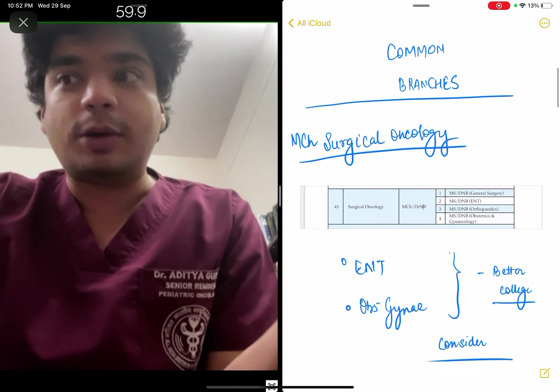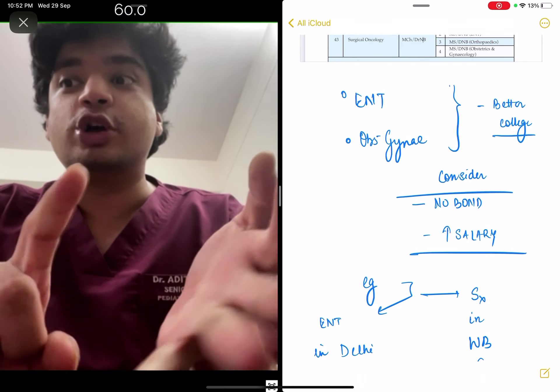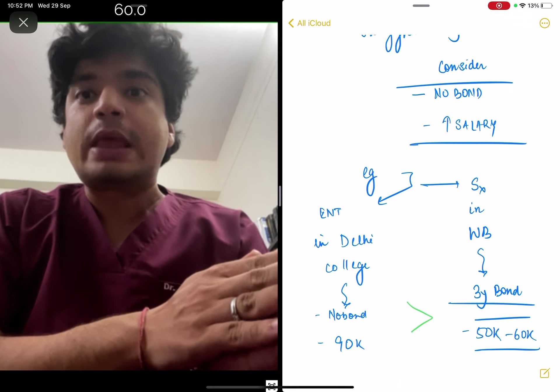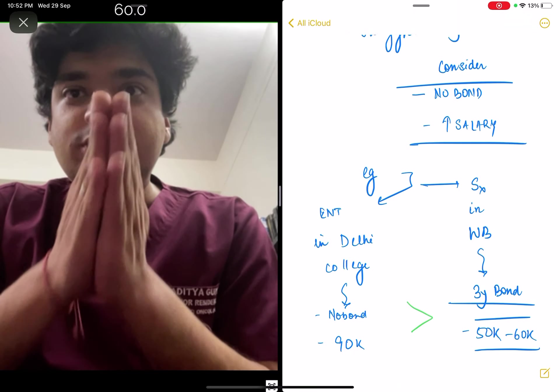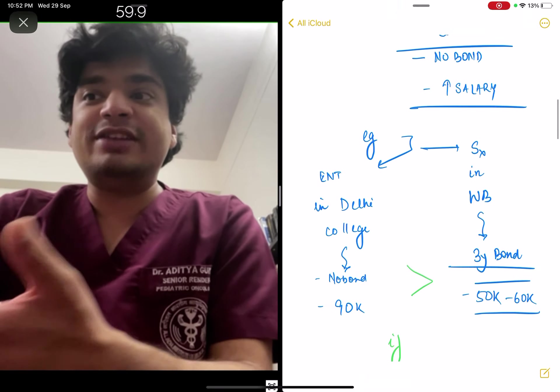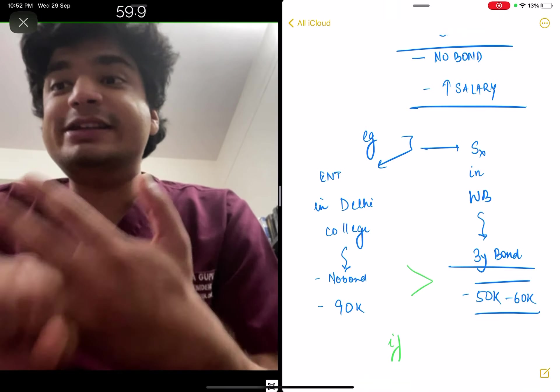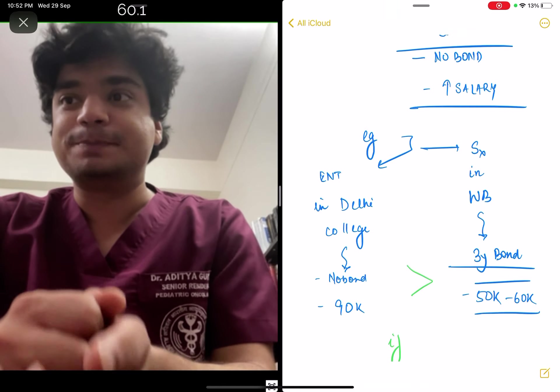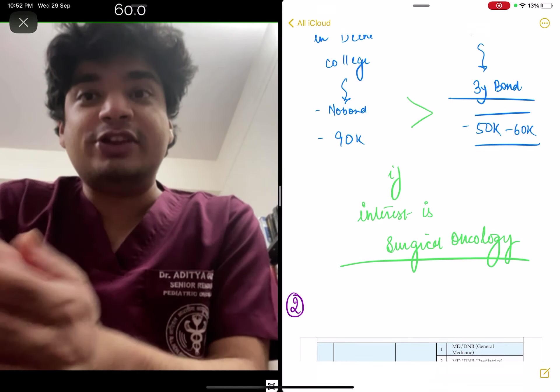For people who might not be getting surgery at a place of their choice but are getting ENT, OBS Gynae, they can actually choose a better college which may have no bond or increased salary. For example, if you're getting ENT in a Delhi college but not surgery, and your ultimate goal is surgical oncology, you can go for ENT in a Delhi college.